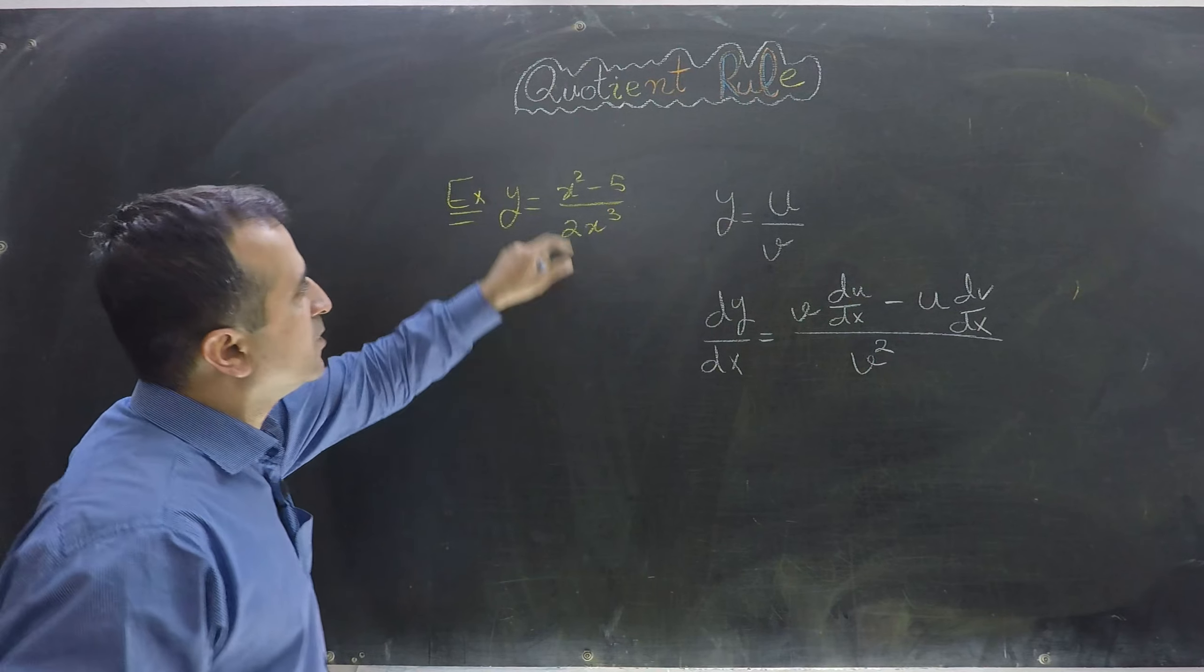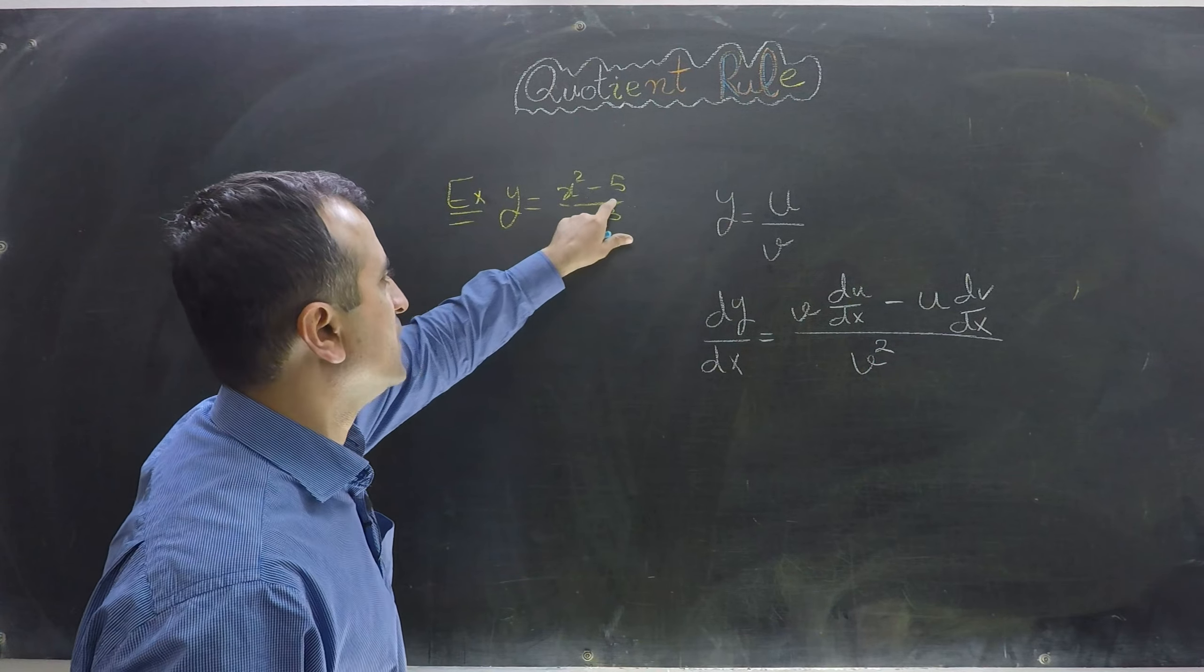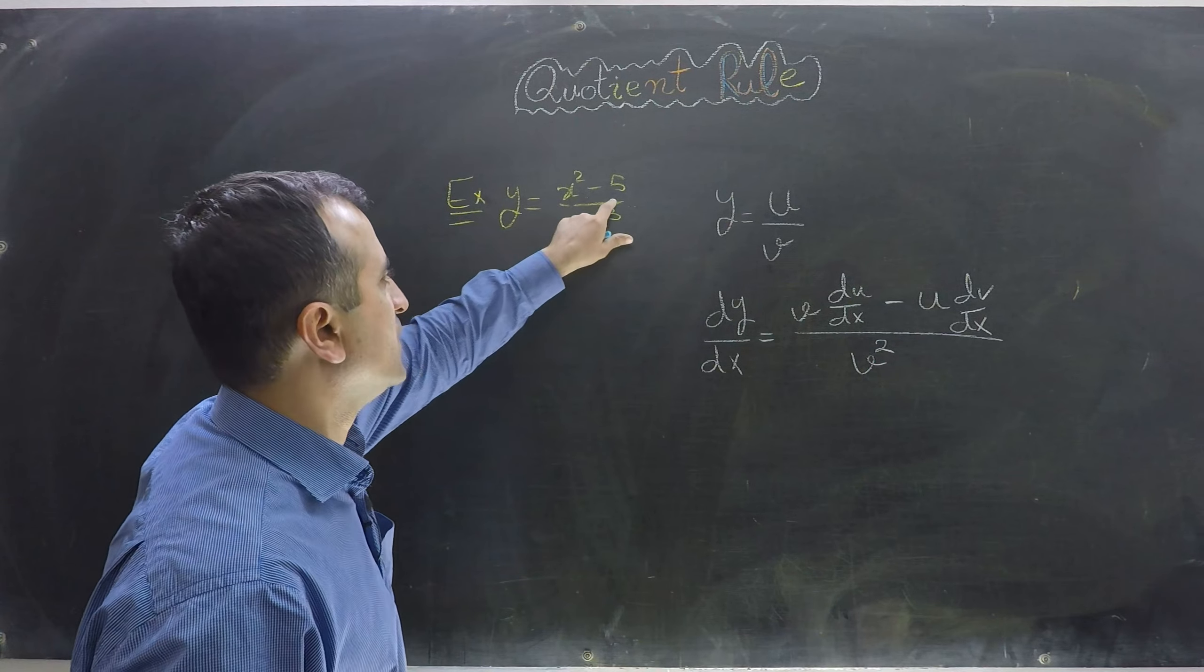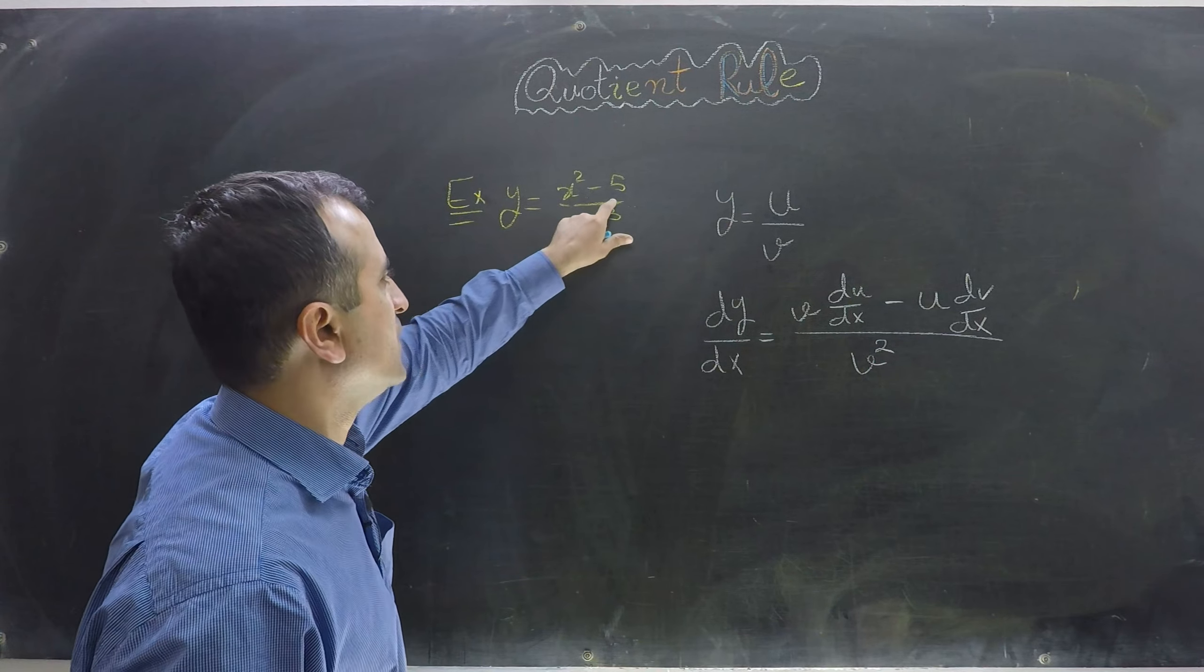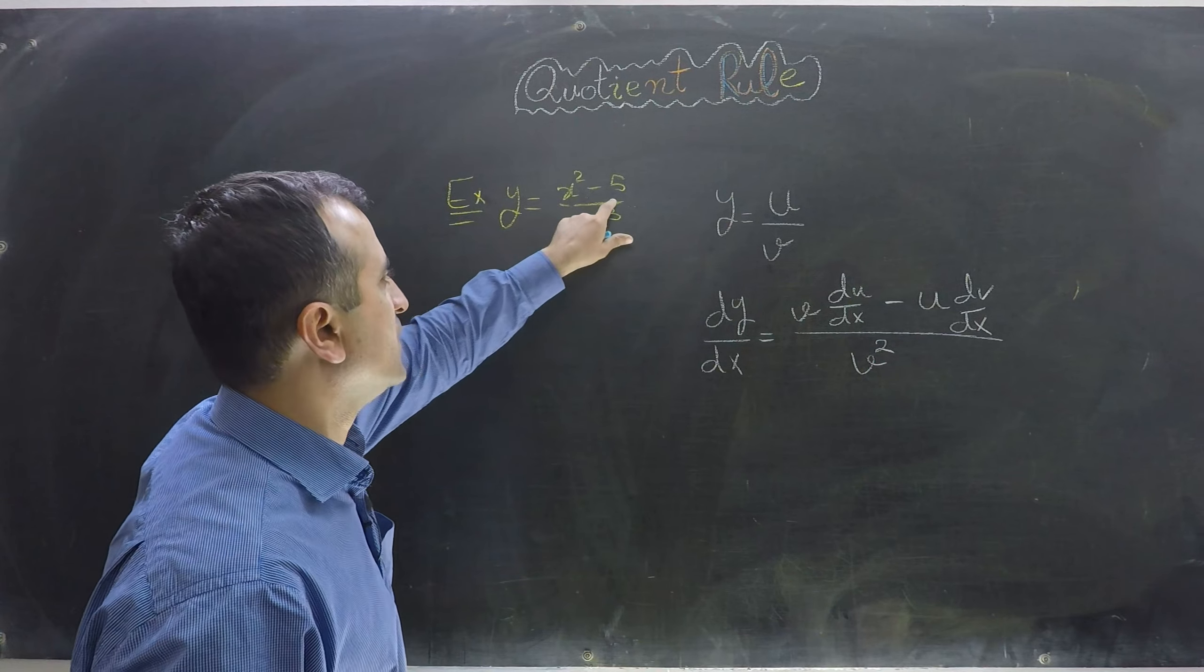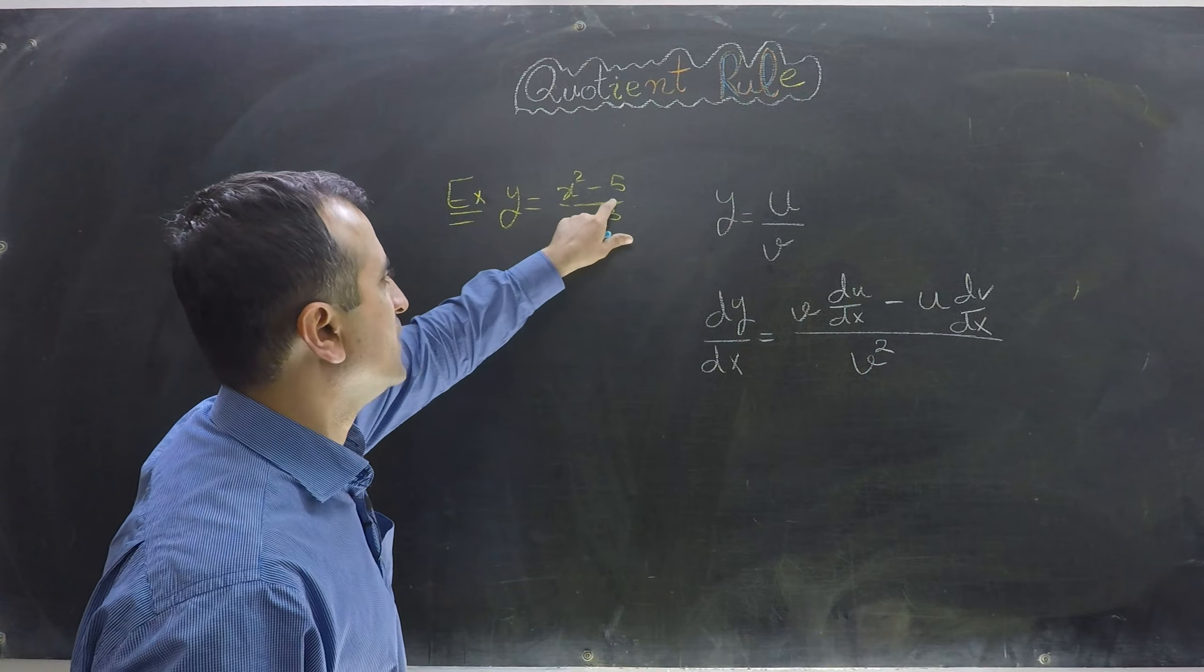Let's do an example to make this crystal clear. In this example, my numerator is x squared minus 5, and my denominator is 2x cubed.